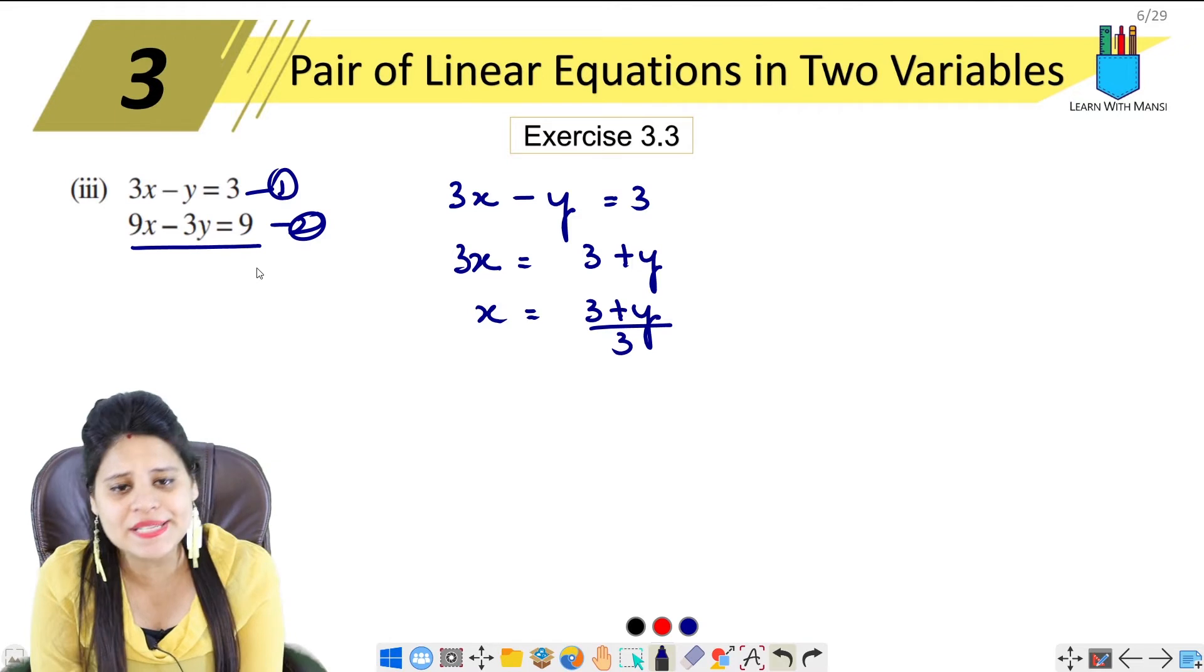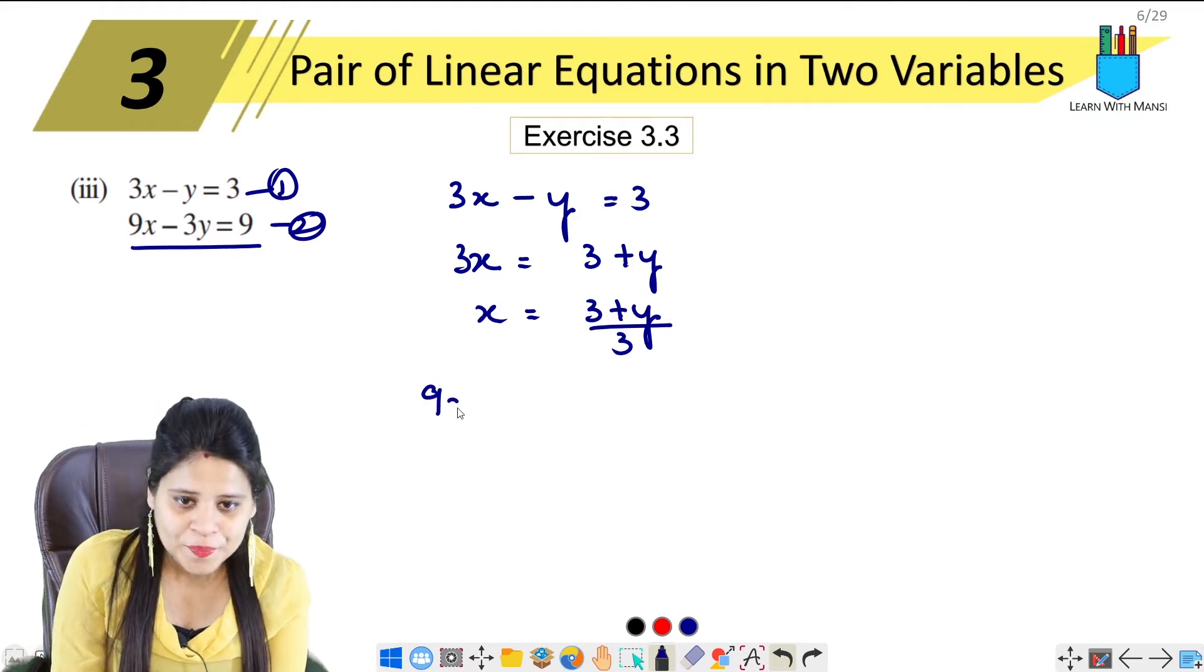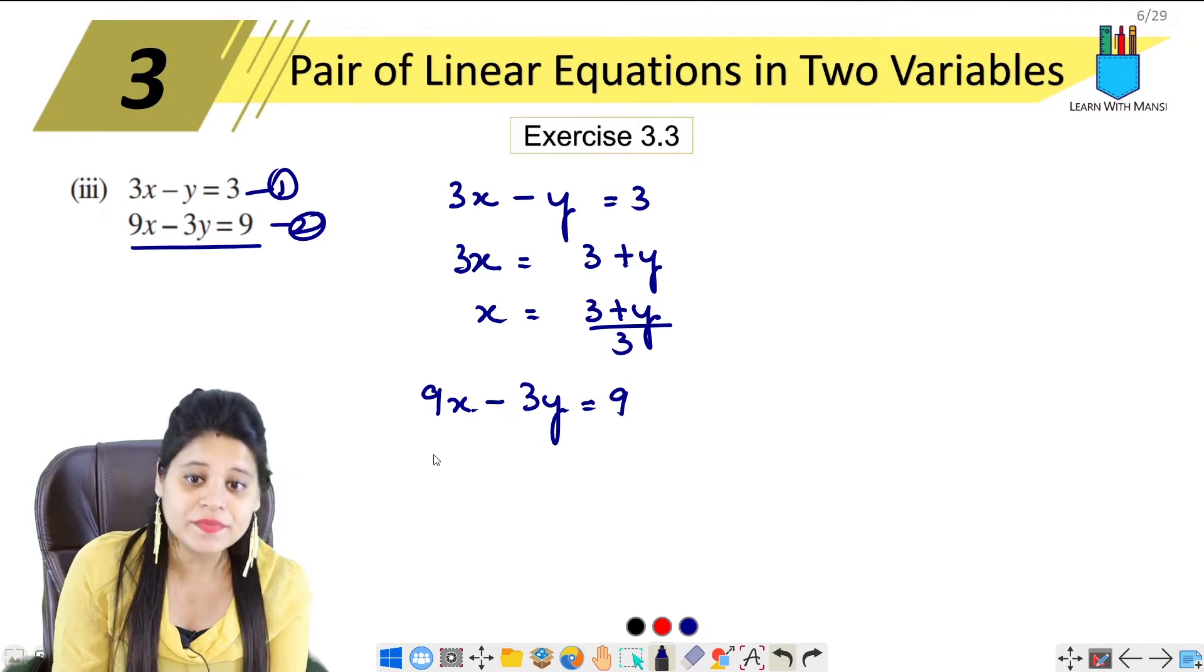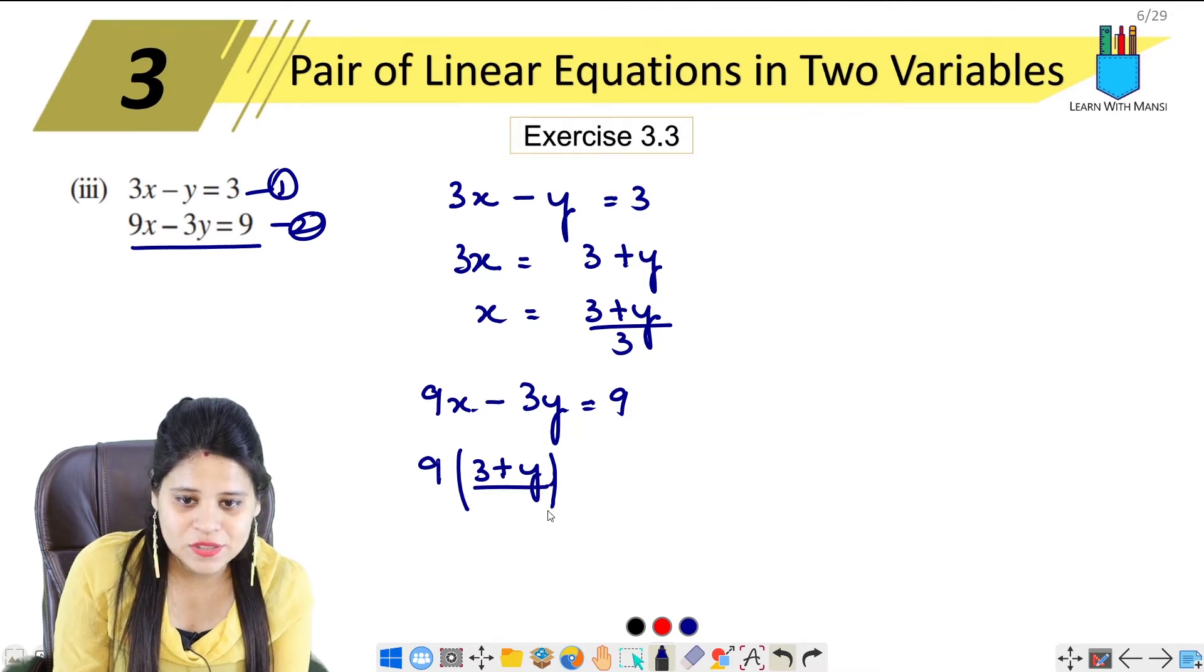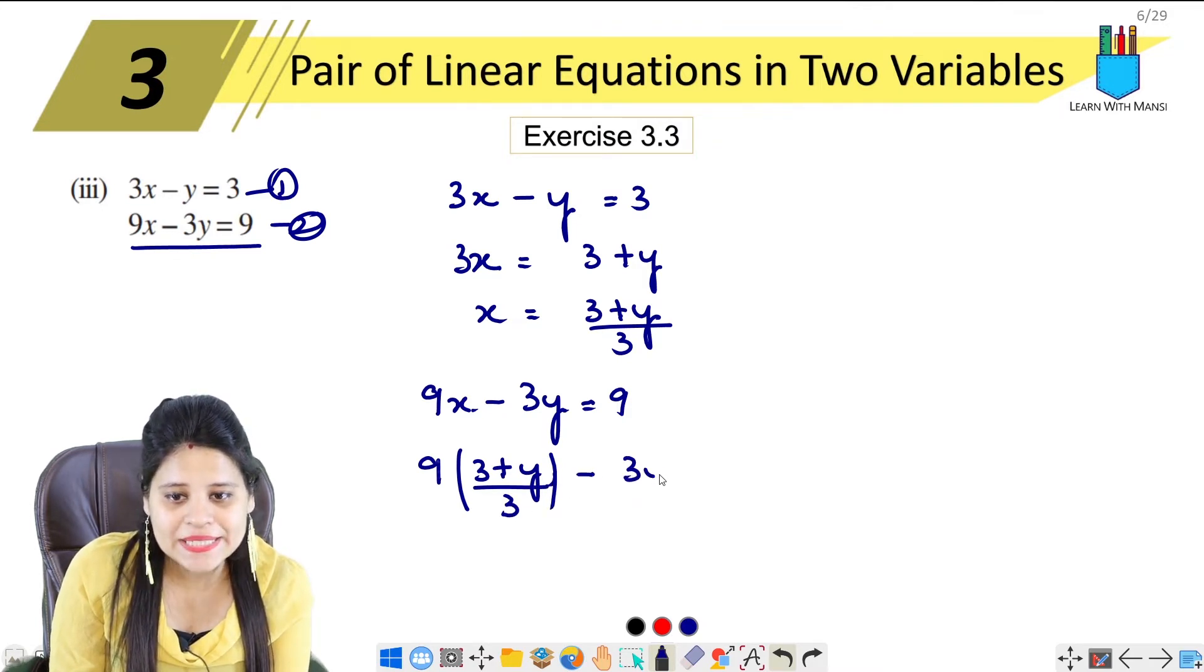So you can write it. Put the value of x in equation 2. 9x minus 3y equals 9. In place of x, here we will write 3 plus y upon 3. This is upon 3, minus 3y equals 9.